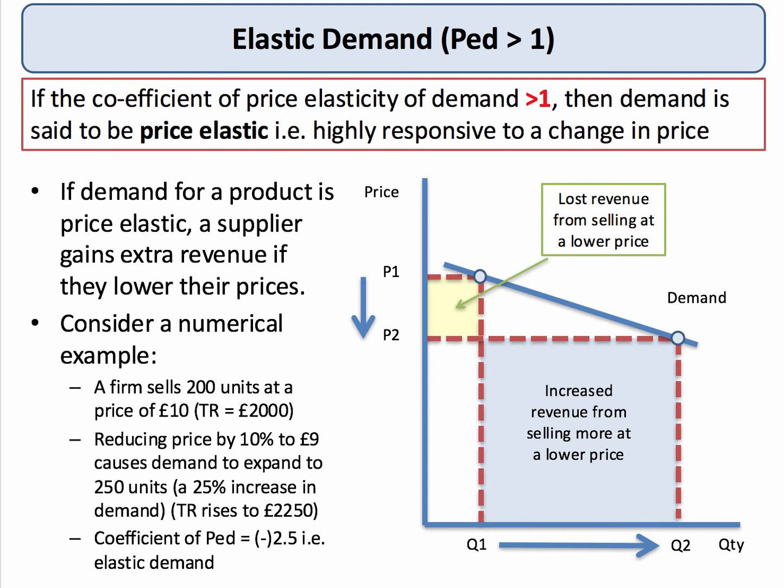Let's just quickly work through a numerical example. Let's say a firm is selling 200 units of a product at a price per unit of £10. That gives a total revenue of £2,000. Now, let's say they cut their price by 10% to £9 per unit. The result of that is that demand expands to 250 units — they're now selling 50 units more. That's a 25% increase in demand.